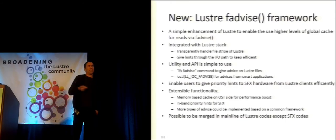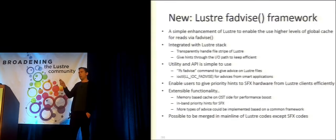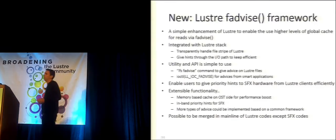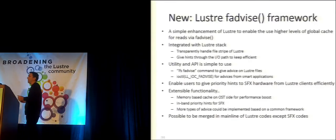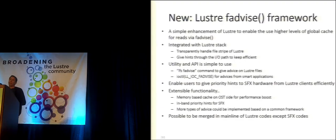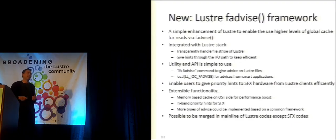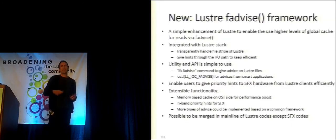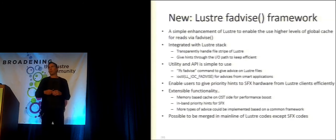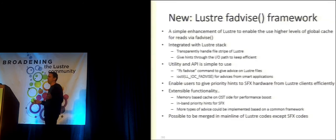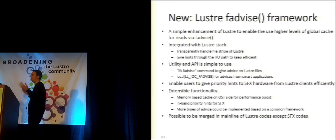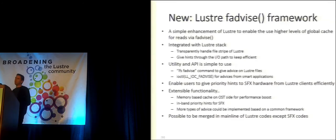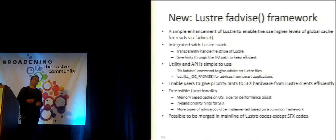But if you run that POSIX FAdvise command on top of a Lustre client, you'll end up with the file you're interested in moving into the RAM of the client — and that's not going to be too helpful, because the next read is likely to come from another node somewhere else. So we need to modify this framework to use the global Lustre cache, so when we order up a file, it moves into a globally available Lustre cache in the file system.